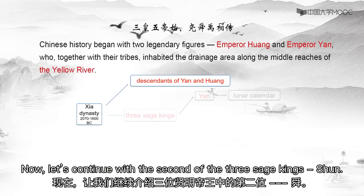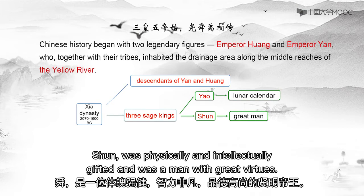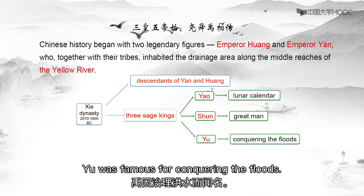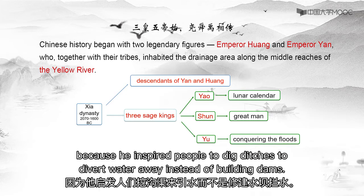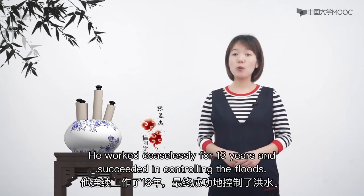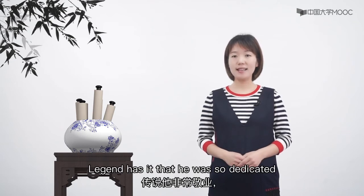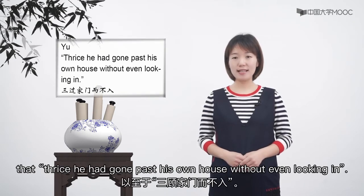Now let's continue with the second of the three sage kings, Shun. Shun was physically and intellectually gifted, and was a man of great virtues. Yu was famous for conquering the floods. He was clever because he inspired people to dig ditches to divert water away instead of building dams. He worked ceaselessly for 13 years and succeeded in controlling the flood. Legend has it that he was so dedicated that thrice he had gone past his own house without even looking in.